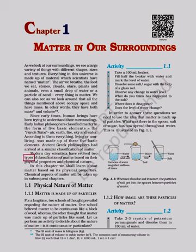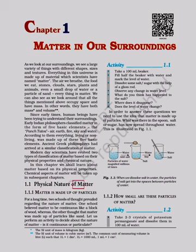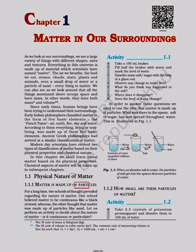Ancient Greek philosophers had arrived at a similar classification of matter. Modern day scientists have evolved two types of classification of matter based on their physical properties and chemical nature. In this chapter we shall learn about matter based on its physical properties.